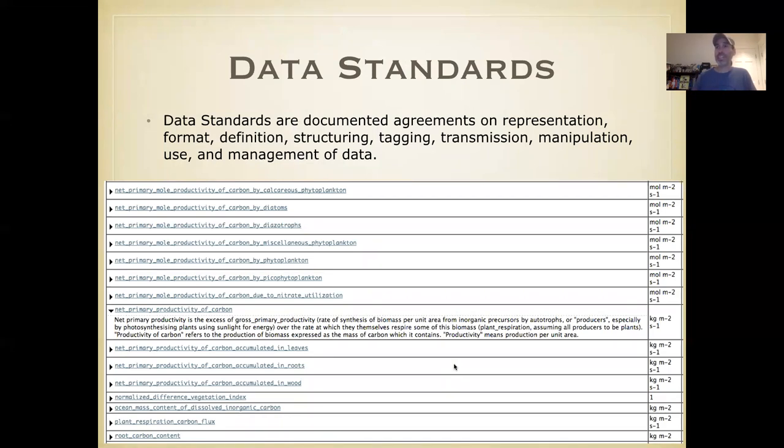Where possible, anytime they exist in a community, you should be strongly encouraged to use any data standards that exist. Data standards are documented agreements on the representation, format, definition, structure, tagging, transmission, manipulation, use and management of data. Basically, they're when a community comes together for a certain type of data and agrees on how that data should be stored and managed, what variable names mean, what units are used. It allows much greater interoperability of data and much greater transparency over making something up yourself. This example here is the example variable names from the CF standard, the climate forecast standard, which is used by a number of different parts of environmental sciences, particularly atmospheric sciences.